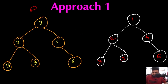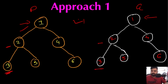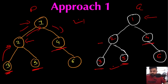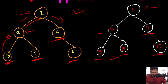Walking through the example: at the root position, both values are 1 — we're good. On the left side, this value is 2 and this value is also 2 — good. Going further left, both values are 3 — good. Going back and checking the right subtree of that node, both values are 5 — good. Back to the root's right side, both nodes are 4 — good. And finally both nodes are 6. We have traversed all nodes in both trees and all values matched, so we return true.